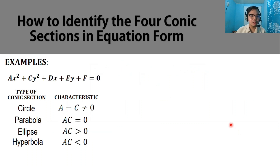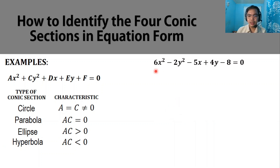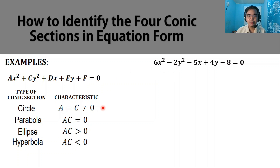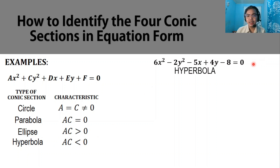Let's have examples using the general form ax squared plus cy squared plus dx plus ey plus f equals 0. Example 1: 6x squared minus 2y squared minus 5x plus 4y minus 8 equals 0. Here a is 6 and c is negative 2. They are not equal, so it is not a circle. Multiplying: 6 times negative 2 gives negative 12, which is a negative number. So the product of a and c is negative, meaning this equation is a hyperbola.